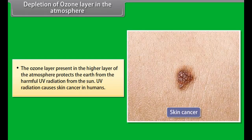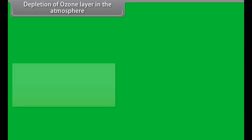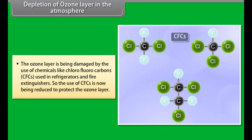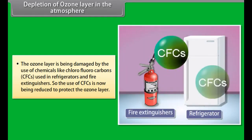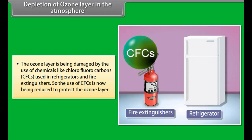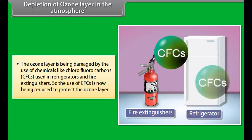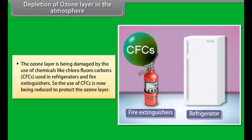Garbage should be disposed of properly. Some of the methods of garbage disposal are: landfills, recycling, production of biogas and manure, preparation of compost, incineration, and sewage treatment. Another major environmental concern is the depletion of the ozone layer in the atmosphere.